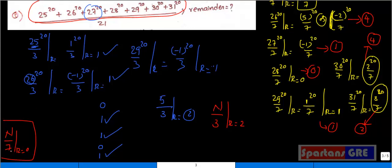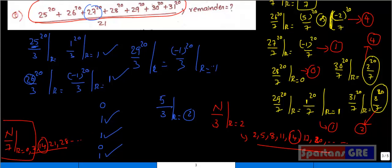Now combining: a number when divided by 7 gives remainder 0, so possible values are 7, 14, 21, 28 and so on. A number when divided by 3 gives remainder 2, so possible values are 2, 5, 8, 11, 14, 17, 20 and so on. The first common number is 14. So the final remainder when n is divided by 21 is 14. Please comment if you are interested to know Chinese Remainder Theorem and Euler's theorem in detail.